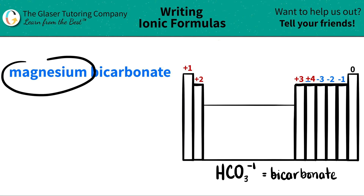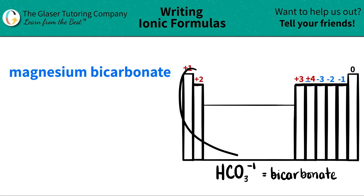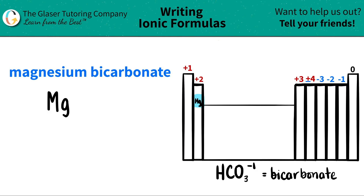The first thing that I see is magnesium. I'm going to scan the periodic table to find where magnesium is, and magnesium is right here. It's in group 2, represented by Mg. All group 2 elements are alkaline earth metals, and they all have a charge of plus 2. So they lose two electrons when they form compounds — magnesium is going to be a plus 2.